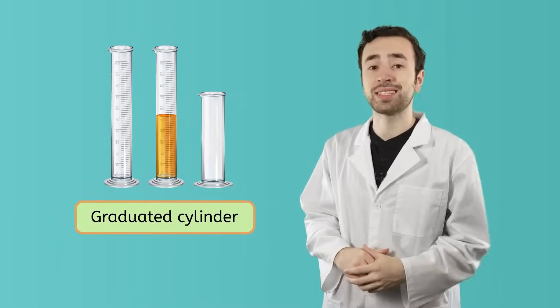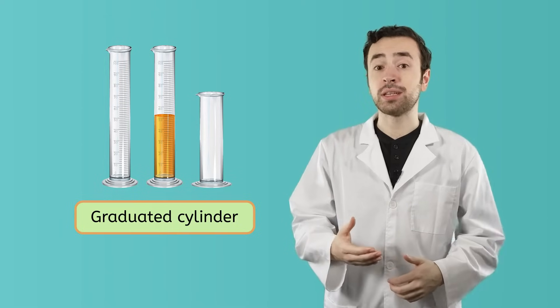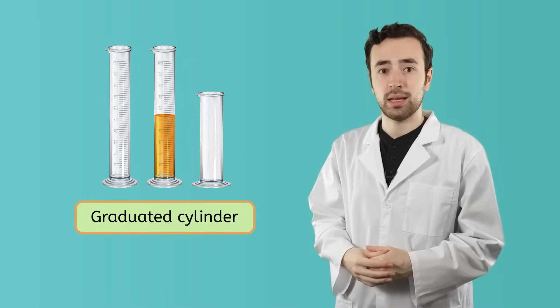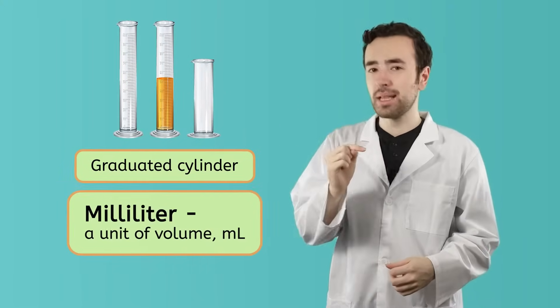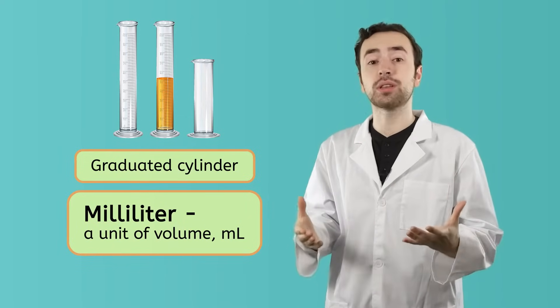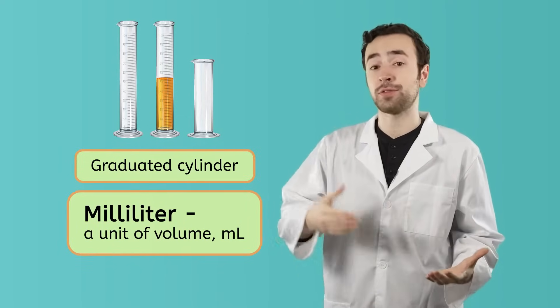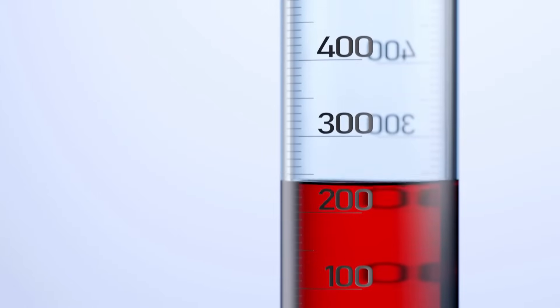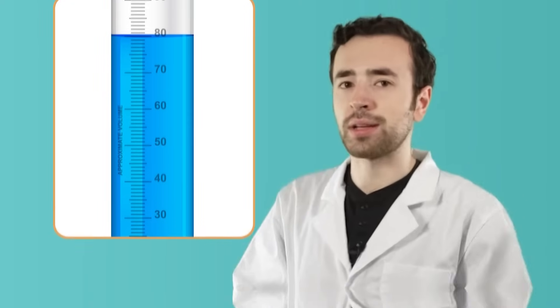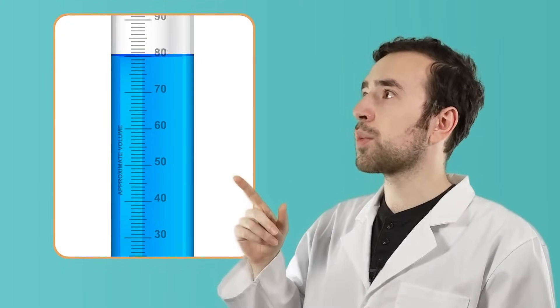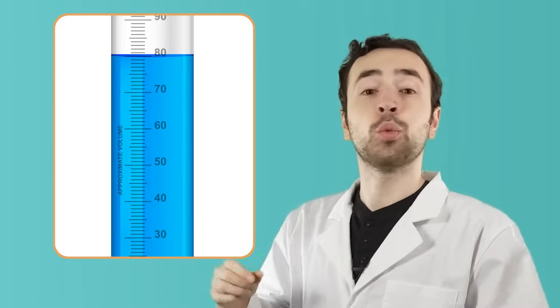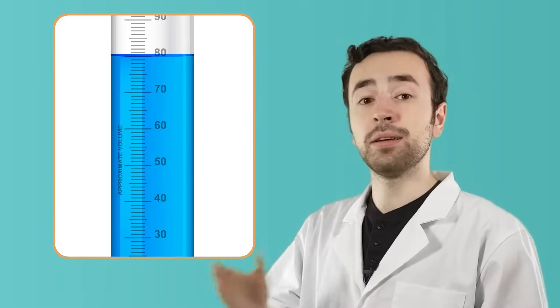We also know that liquids take the shape of whatever container they're in. So to measure a liquid, all we have to do is pour it into a special container known as a graduated cylinder. A graduated cylinder is a special container that has lines to measure the amount of liquid within it. Each line represents one milliliter. That's a unit of volume, just like how a gram is for mass. To find the volume of a liquid, we just pour it into the graduated cylinder and see what line it reaches. For example, this liquid right here goes all the way up to the 80 line. So we know that the volume of this liquid is 80 milliliters.